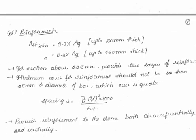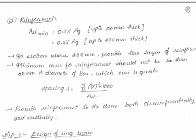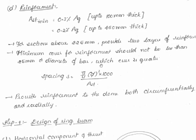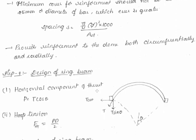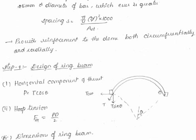For reinforcement, the minimum Ast can be taken as 0.3% of the gross cross-sectional area for sections up to 100 mm thick, reducible to 0.2% for sections above 225 mm thick. For sections up to 450 mm, two layers of reinforcement must be provided — not only in tension but also in the compression zone. Minimum cover must not be less than 25 mm or the bar diameter, whichever is greater. Provide reinforcement to the dome both circumferentially and radially.